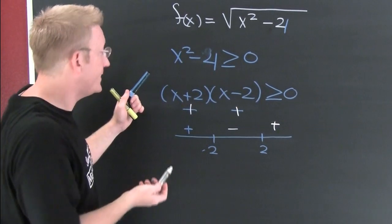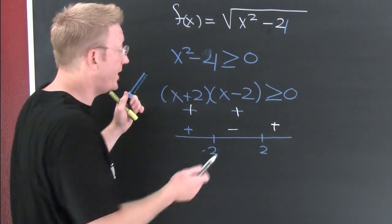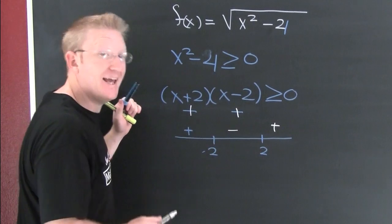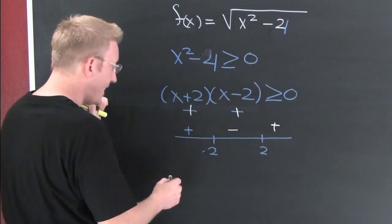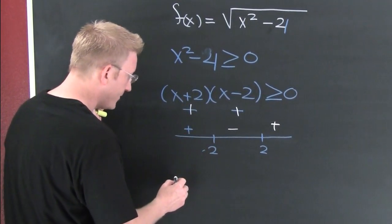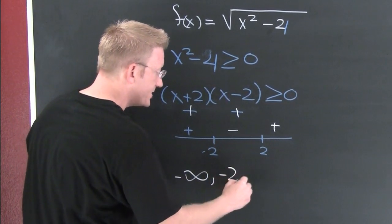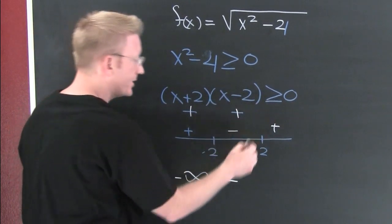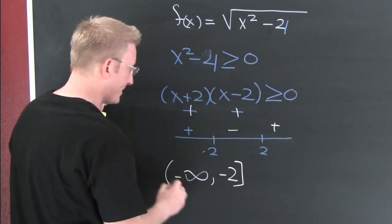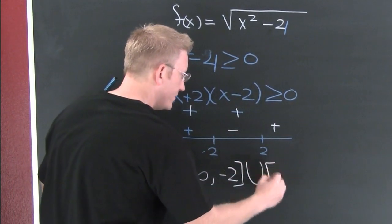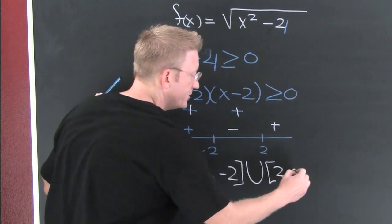So I need to determine where it's bigger than 0, AKA positive. And that is from minus infinity to minus 2, include it, union 2 to infinity.